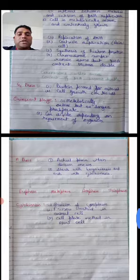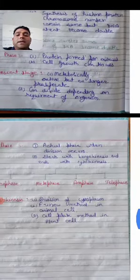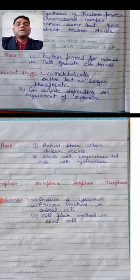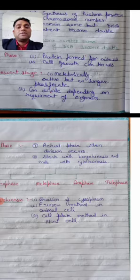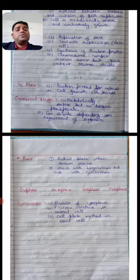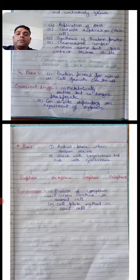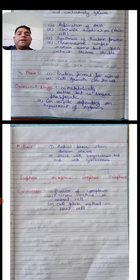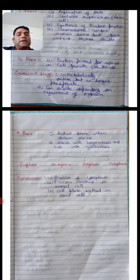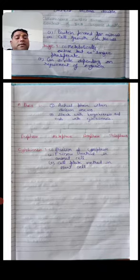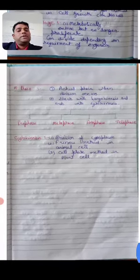Next is G2 phase: proteins required for mitosis are formed, and cell growth continues. There is also another phase called G0 phase. In G0 phase, cells are metabolically active but no longer proliferating. These cells can re-enter the cell cycle depending on the requirement of the organism.